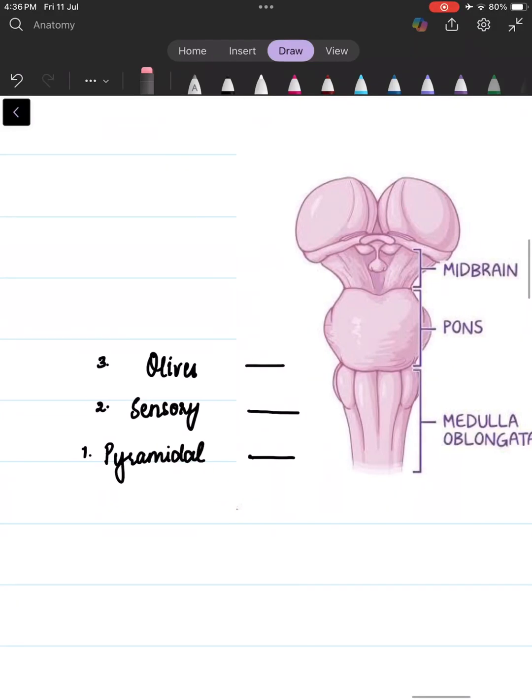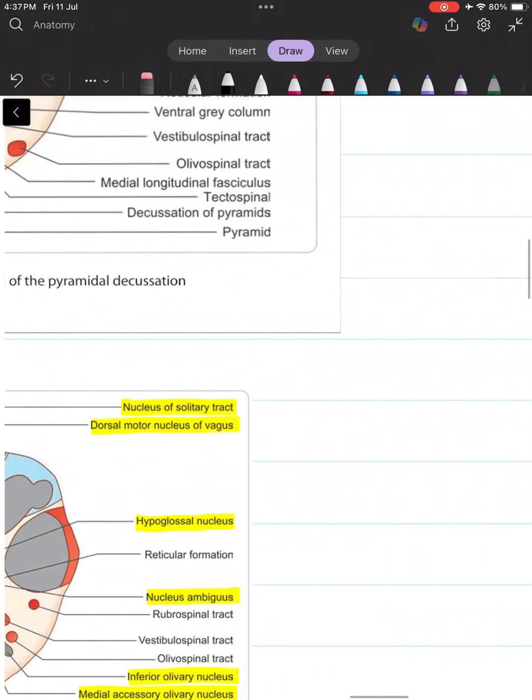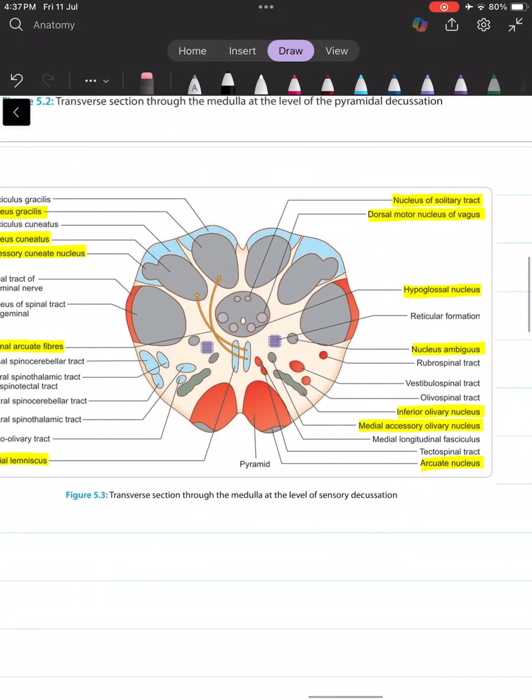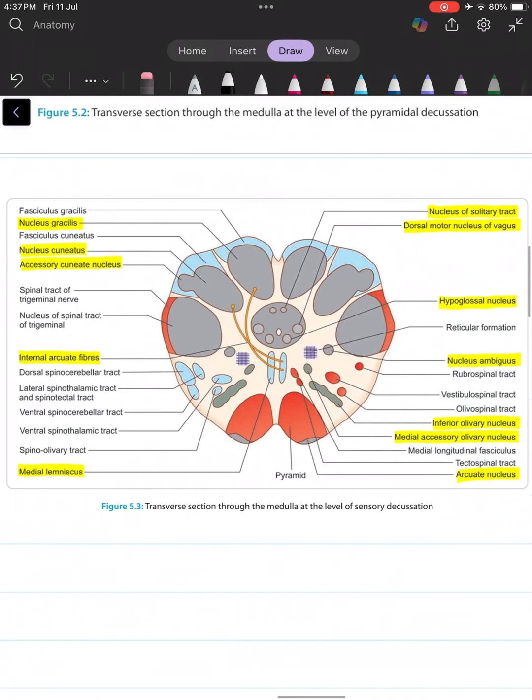The transverse section of medulla is usually studied under three headings: the level of pyramidal decussation, the level of sensory decussation, and the level of olives. We are done with the first level, so today let's study the TS of medulla at the level of sensory decussation.